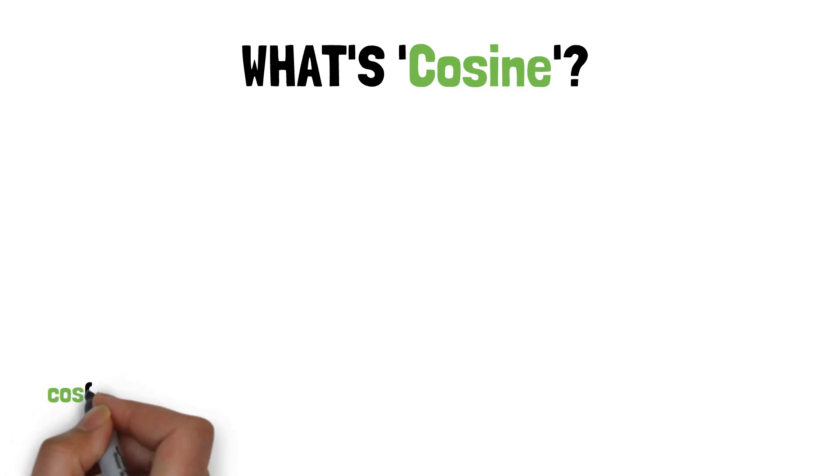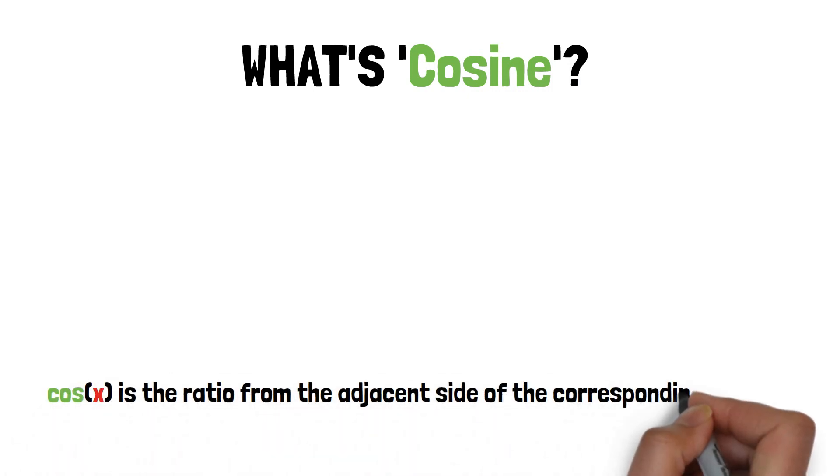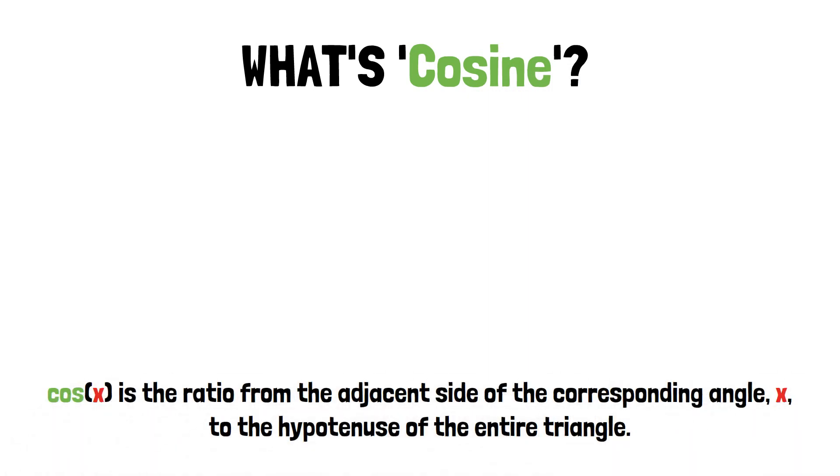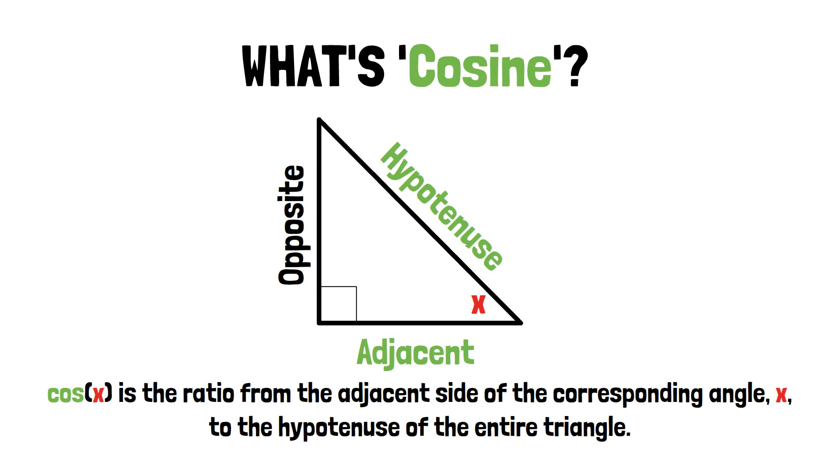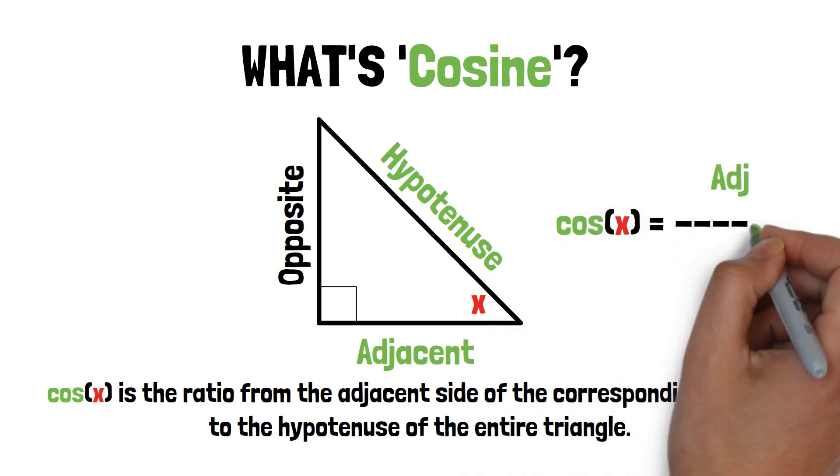What's cosine? Cosine is the same thing, but instead of the opposite side from angle x, it's the adjacent side directly touching x. As you can see, the adjacent side and hypotenuse are marked in green, and the ratio is adjacent over hypotenuse.